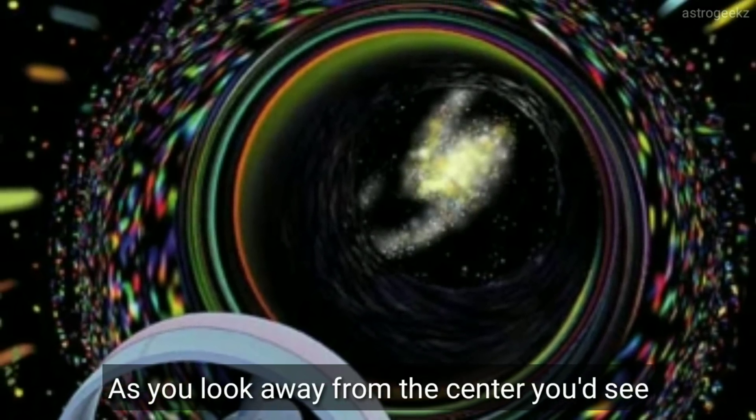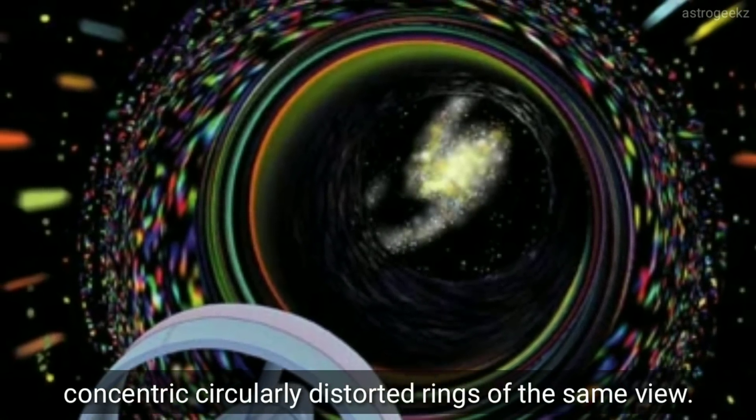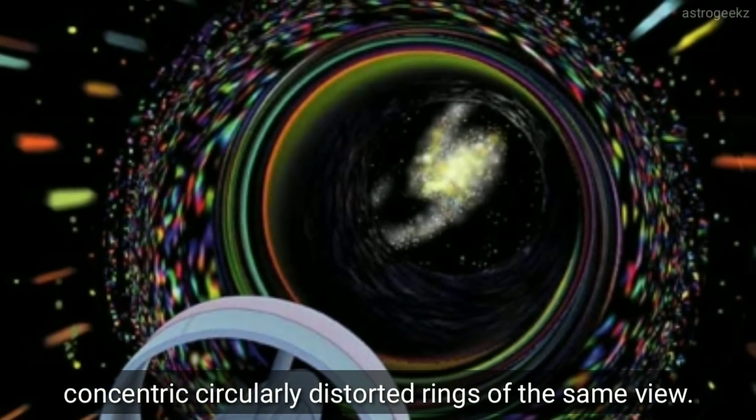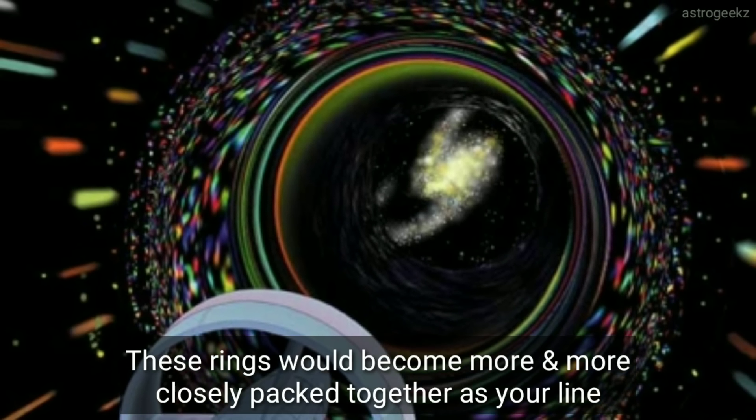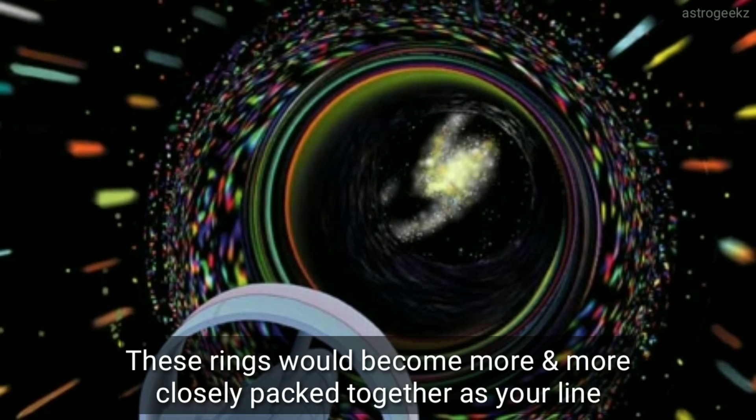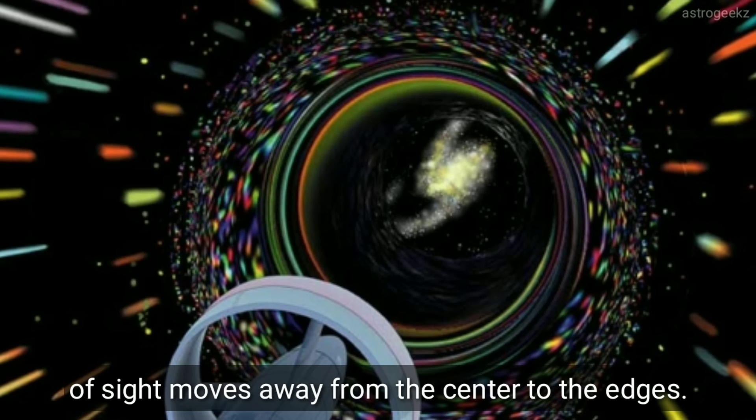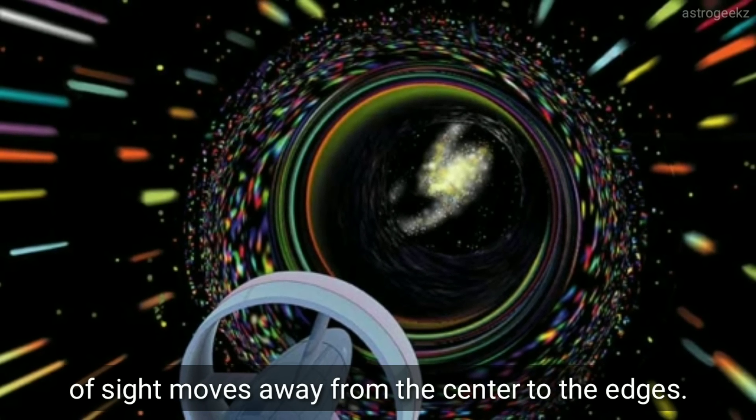As you look away from the center, you would see concentric, circularly distorted rings of the same view. These rings would become more and more closely packed together as your line of sight moves from the center to the edges.